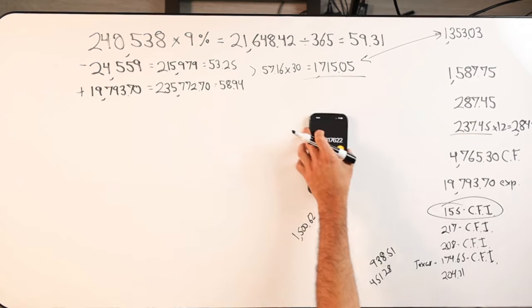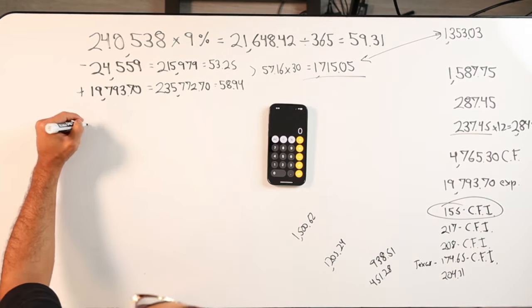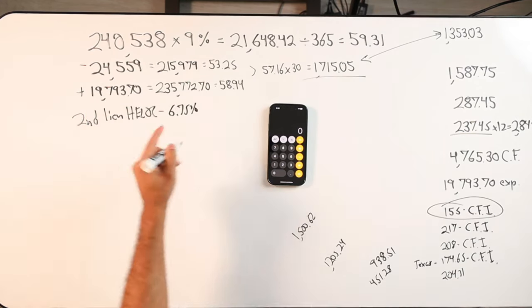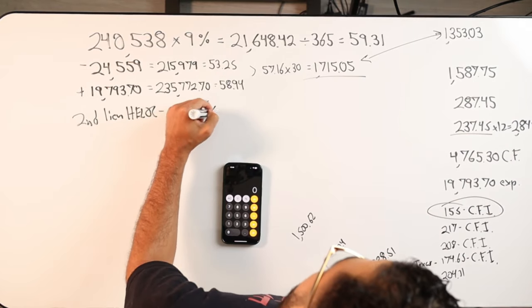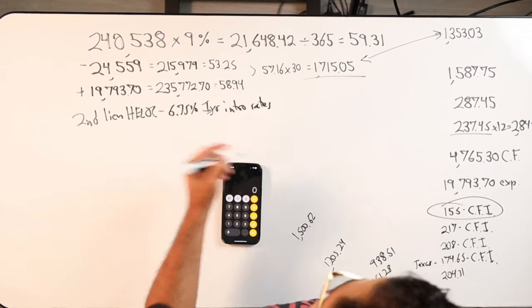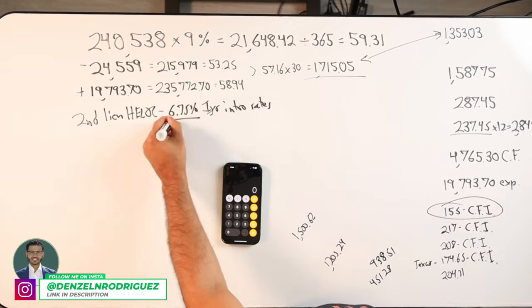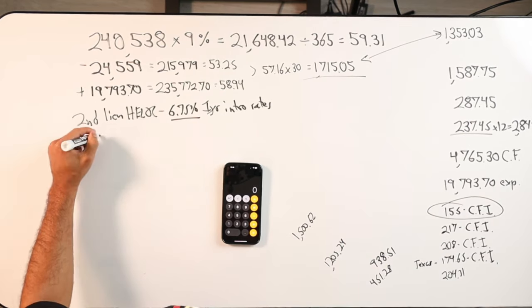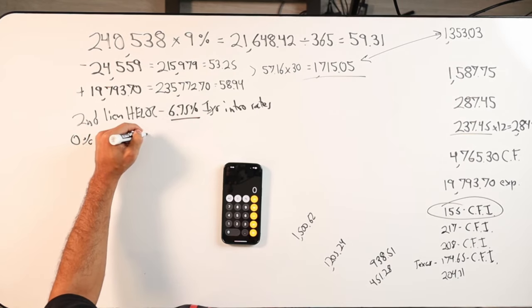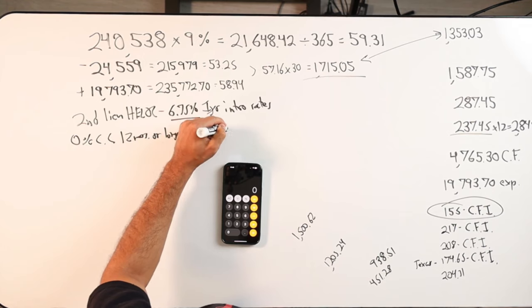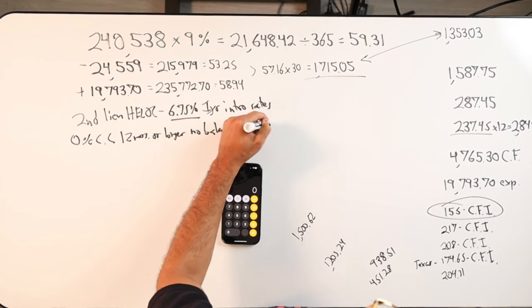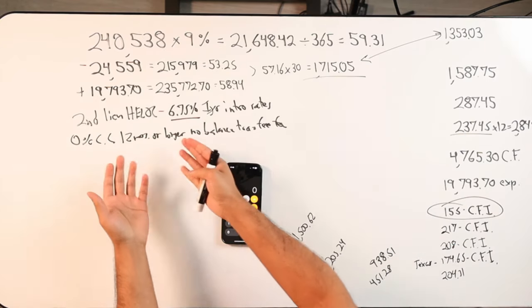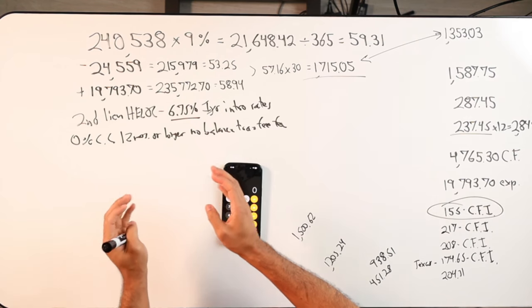The only way this makes sense for me is either going with a second lien HELOC, which is what I would prefer to do. With a second lien HELOC, they typically have these one year intro rates that you can find, and it would be below 6.75%, or right at 6.75 for the first year. Then I also want to leverage maybe a 0% credit card for 12 months or longer with no balance transfer fee. This, to me, is a better version of Velocity Banking.